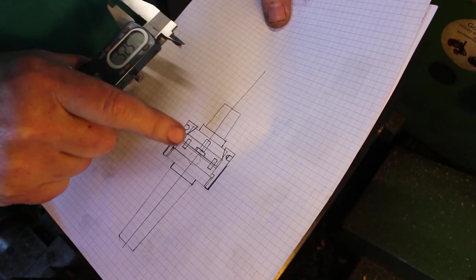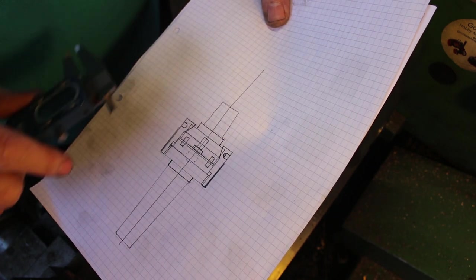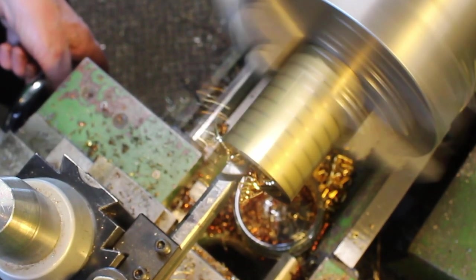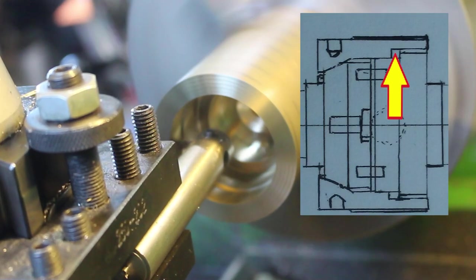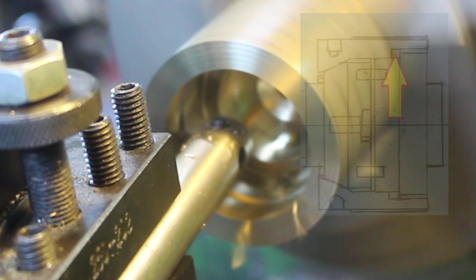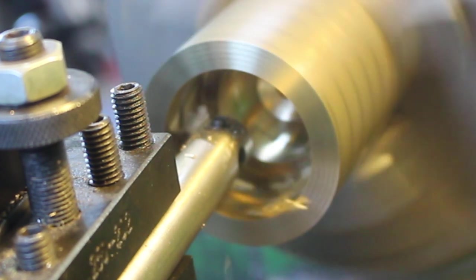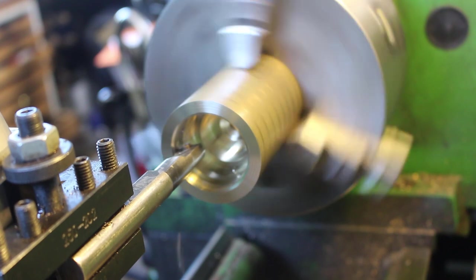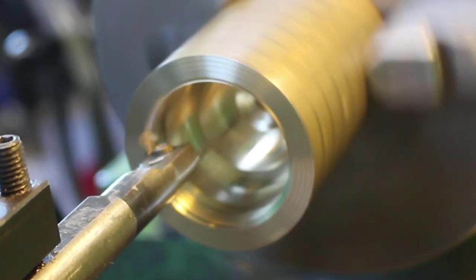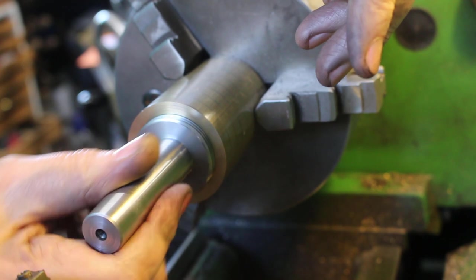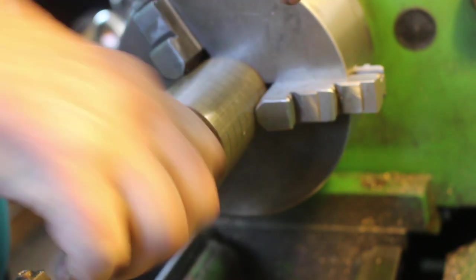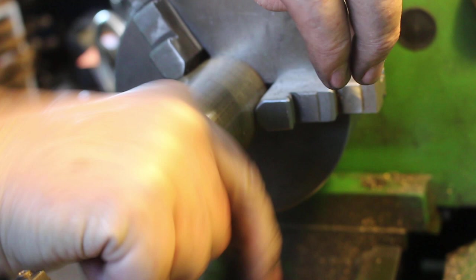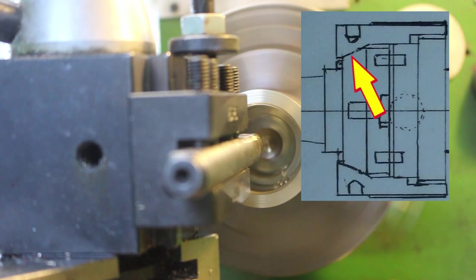So we now want to machine the thread. And we've got a recess at the back for clearance. So I just want to check against the sketch for the depth, boring to the thread minor diameter. Machining in the thread recess. Perfect. Now I'm putting a 35 degree angle in the bottom of this bore.